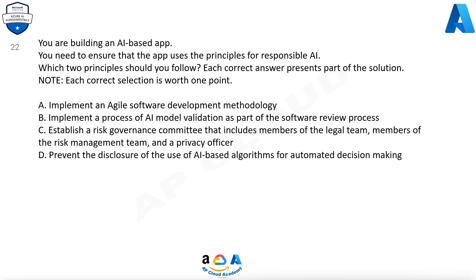Question 22. You are building an AI-based app. You need to ensure that the app uses the principles for responsible AI. Which two principles should you follow? Each correct answer presents part of the solution. Note, each correct selection is worth one point. A. Implement an agile software development methodology. B. Implement a process of AI model validation as part of the software review process. C. Establish a risk governance committee that includes members of the legal team, members of the risk management team, and a privacy officer. D. Prevent the disclosure of the use of AI-based algorithms for automated decision making.